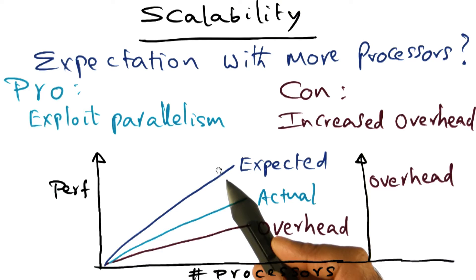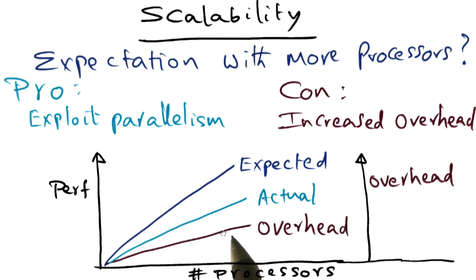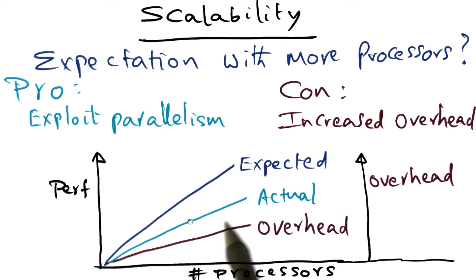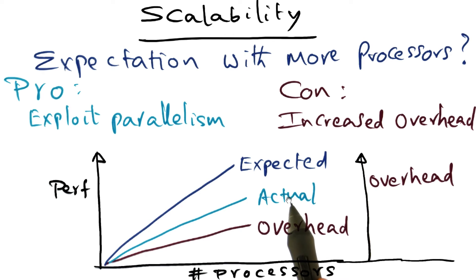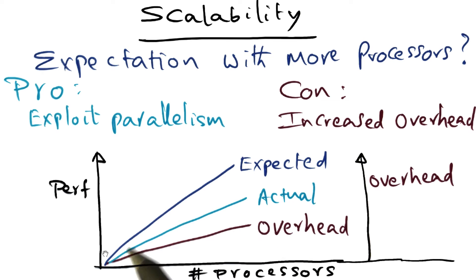In some sense, there's a difference between what your expectation is and the overhead you're paying, and that becomes your actual delivered performance of a parallel machine. It is very important to remember that your delivered performance may not necessarily be linear in the number of processors that you add to the system.